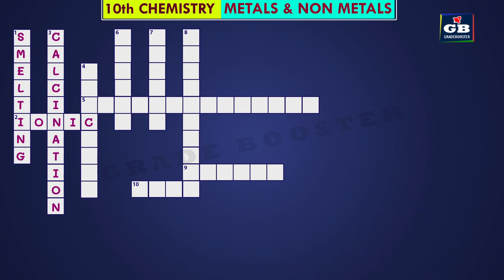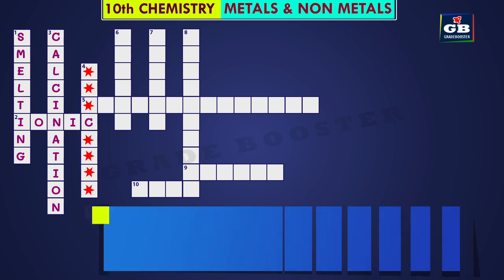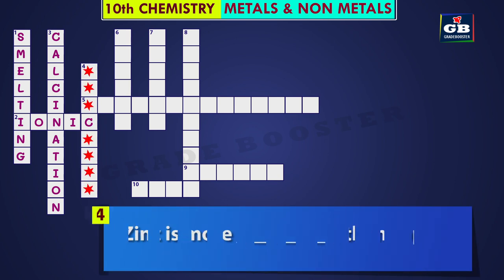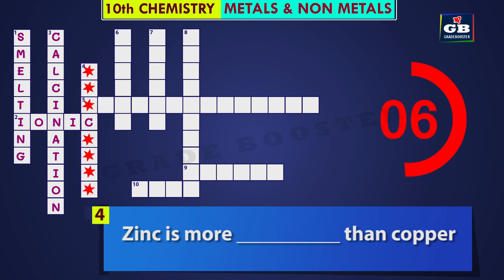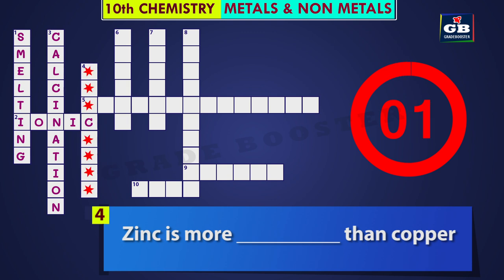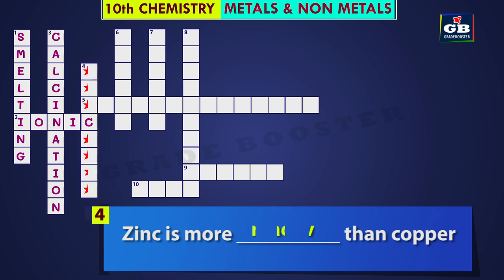Let us see the next one. Four down: zinc is more reactive than copper. Did you get the answer? Zinc is more reactive than copper.